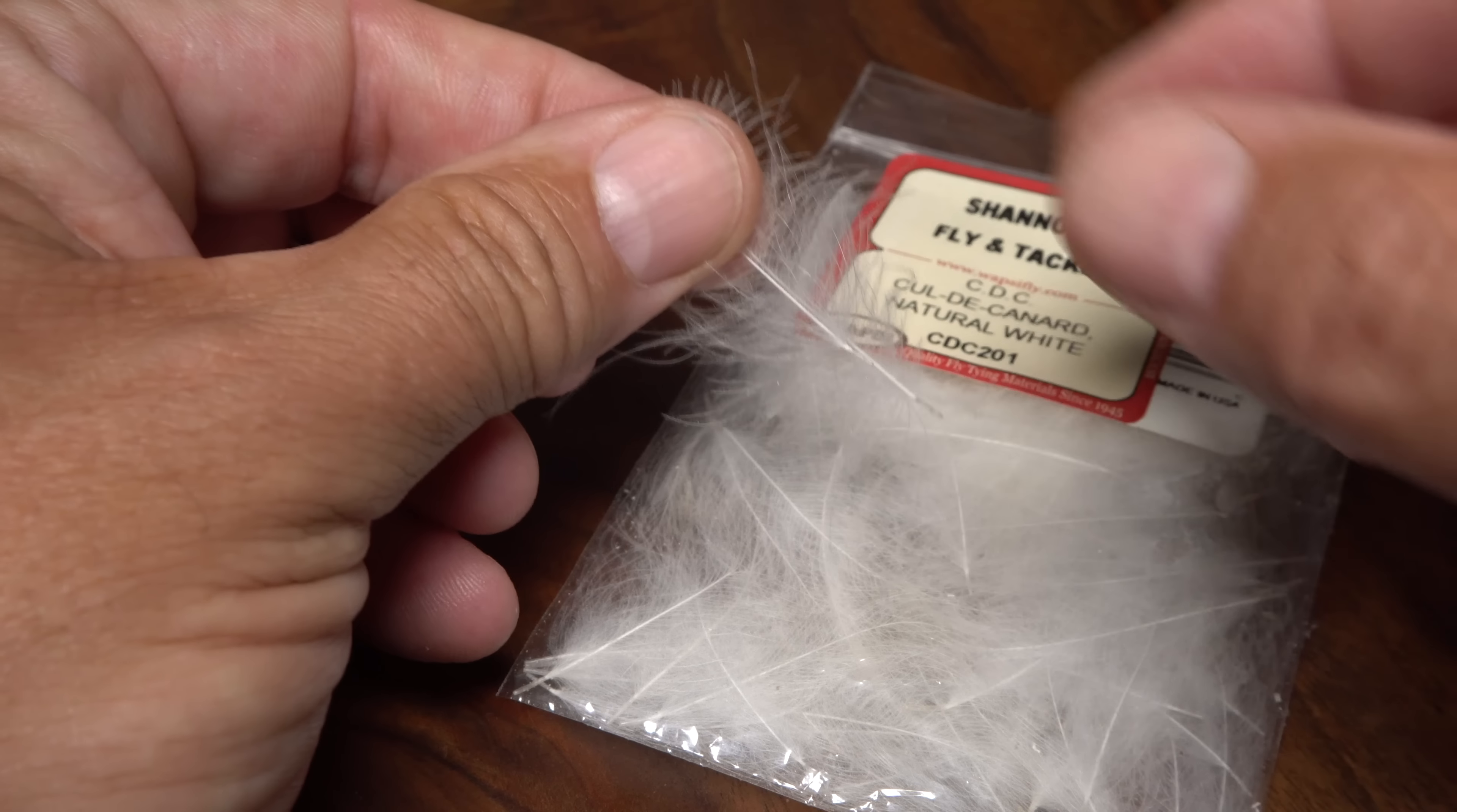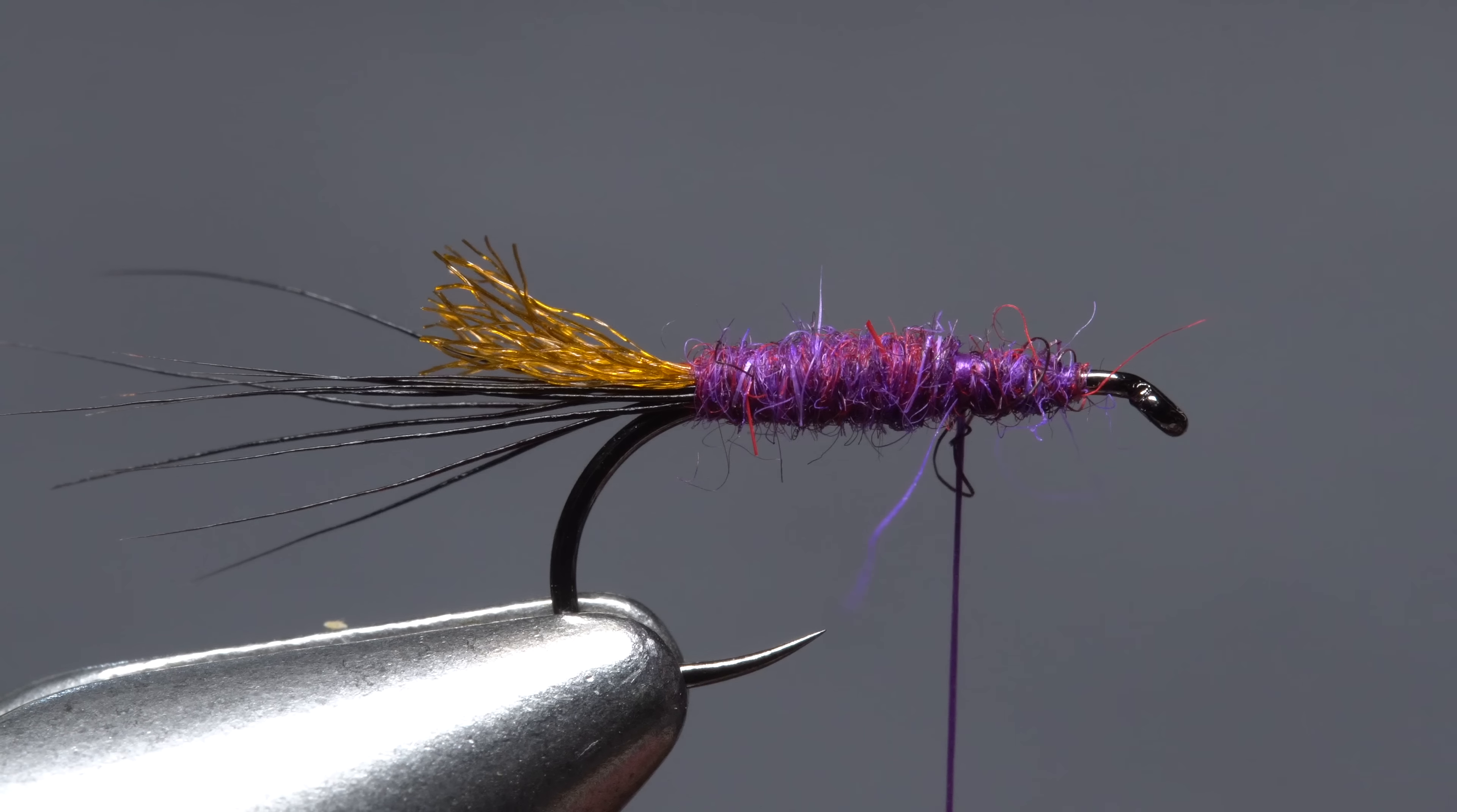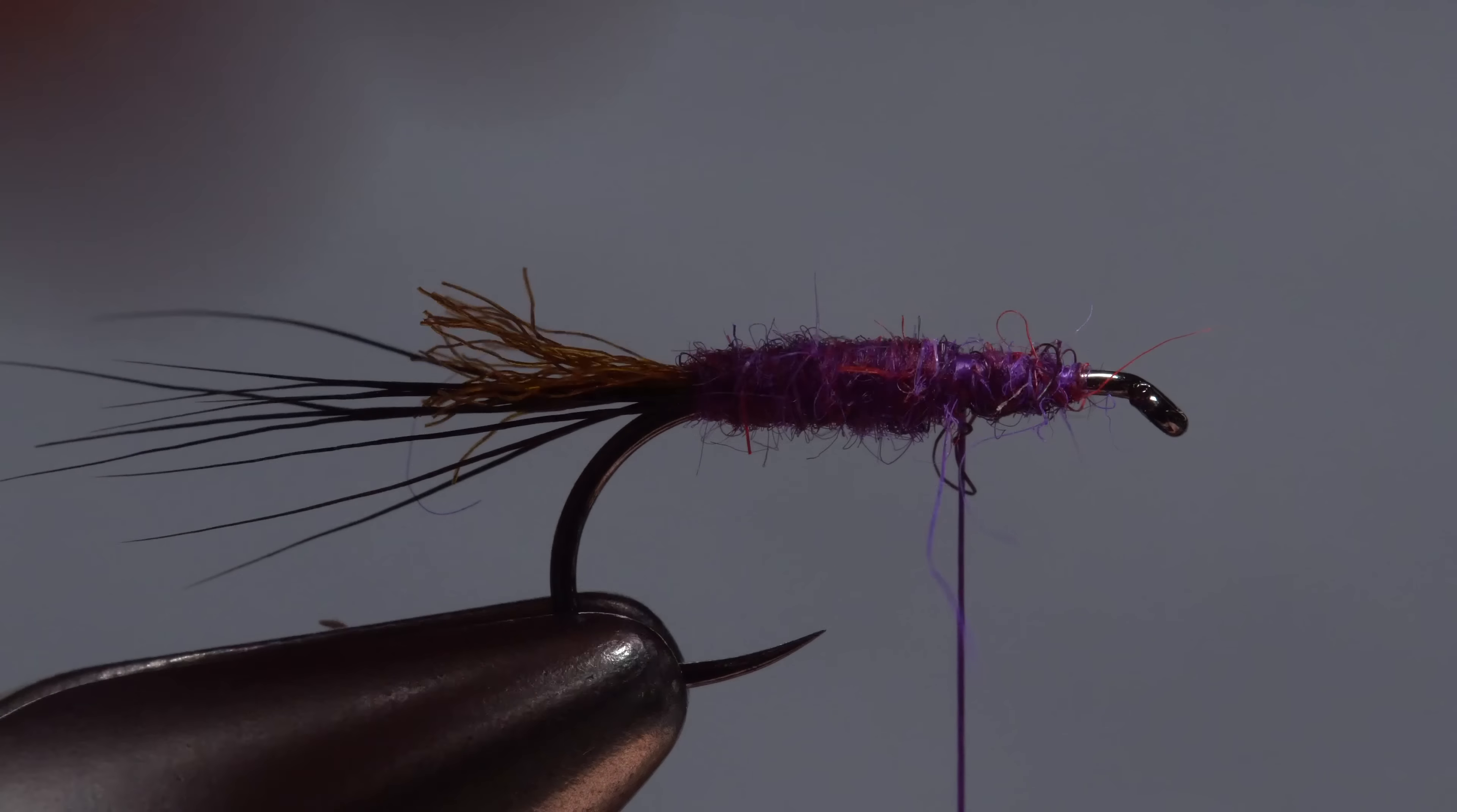Two natural white CDC feathers are used to form the wing of the fly. Align their tips then pull the fibers forward into a small clump. Measure to form a wing a hook shank in length and transfer that measurement forward to the location of your tying thread.